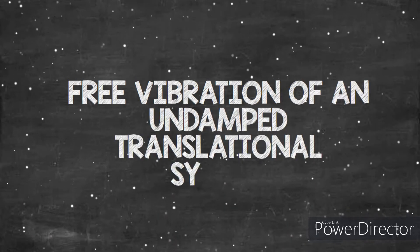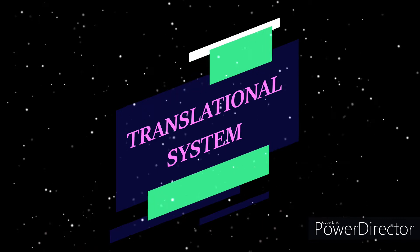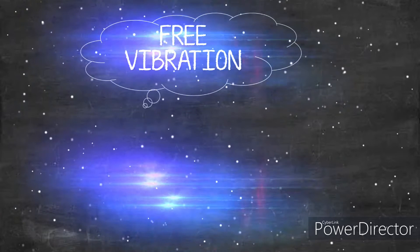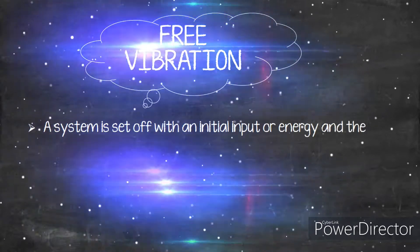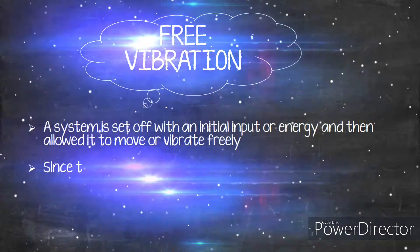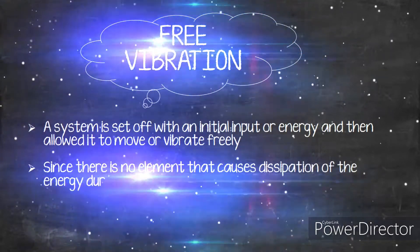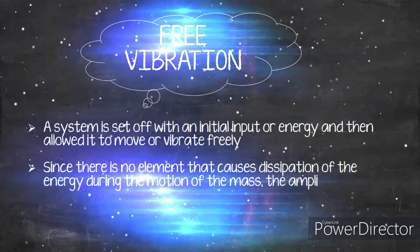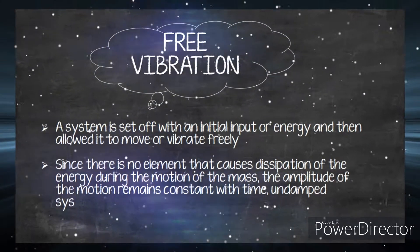For free vibration of an undamped system, there are two types of motion widely used in fundamental physics. The first is linear motion, also known as translational motion. A system is set off with an initial input or energy and then allowed to move or vibrate freely. Since there is no element causing energy dissipation, the amplitude of the motion remains constant with time.